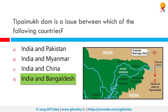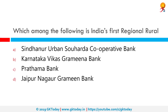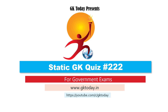Which among the following is India's first regional rural bank? Correct answer is Prathama Bank. Prathama Bank, the first regional rural bank of the country, was established on 2nd October 1975, with head office at Moradabad, under the Regional Rural Bank Act 1975, which was sponsored by Syndicate Bank. That's all for today's quiz. Until the next video, goodbye.